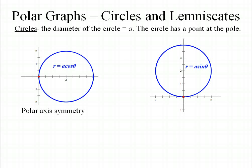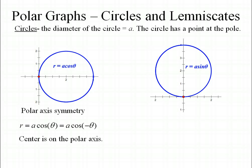For the cosine graph, you're going to have polar axis symmetry. Your polar axis symmetry test is to replace theta with negative theta. Since the cosine of theta is always equal to the cosine of negative theta, these will always be equal, and you'll have polar axis symmetry. Since you have polar axis symmetry, the center of the circle must lie on the polar axis.